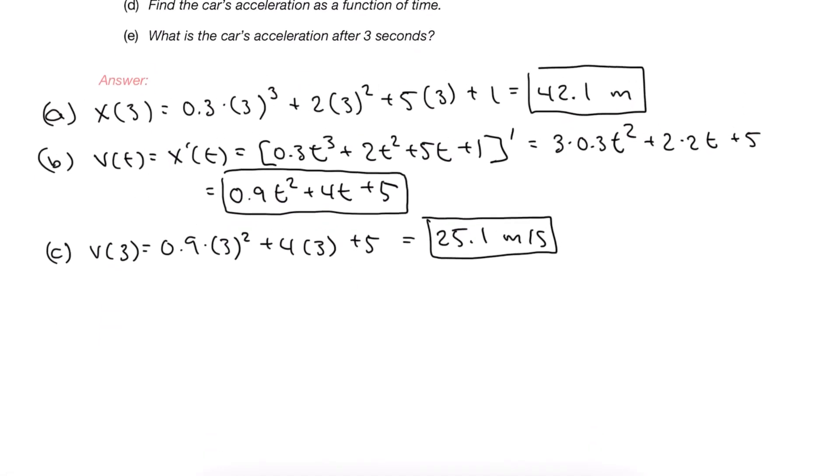In D we're asked to find the car's acceleration as a function of time. The acceleration is the derivative of velocity, and we're going to use the velocity formula from part B and take its derivative. Once we do so, we do it again term by term, and then we simply simplify and get our formula for the acceleration.